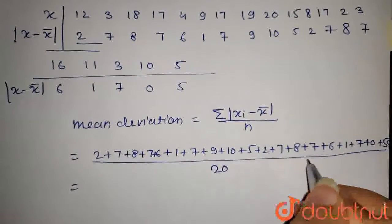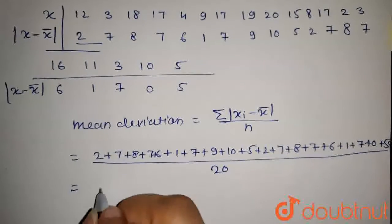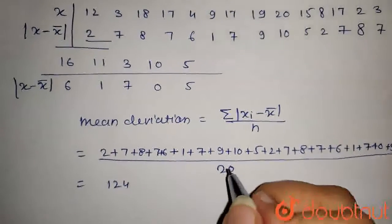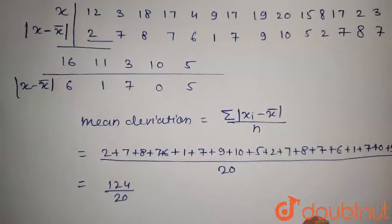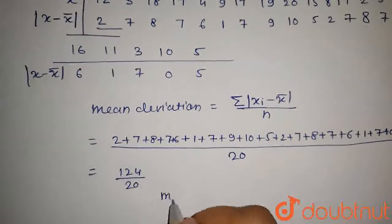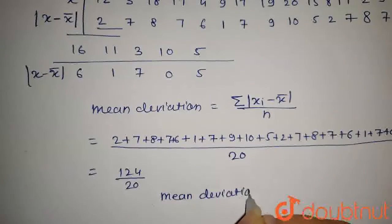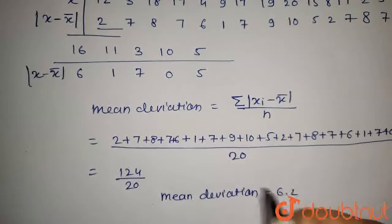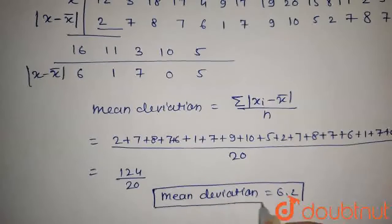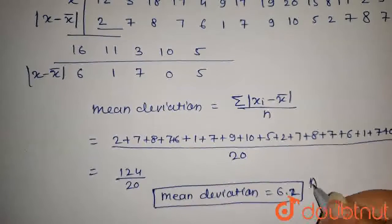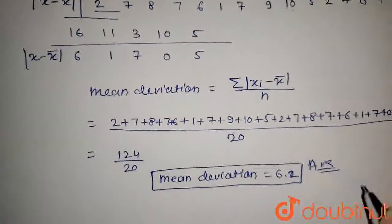Now, sum of this observation will be 124 upon 20. Now, the mean deviation on solving this, we get mean deviation as 6.2. So, this is the mean deviation of this observation. So, this is the answer of this question.